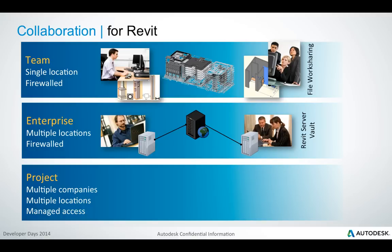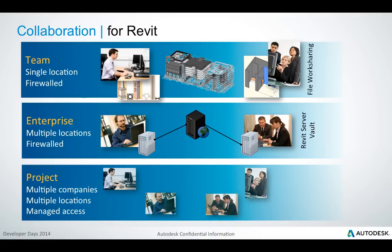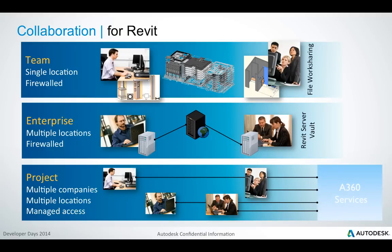We initially saw projects handled by teams in single locations working behind a firewall using file work sharing. As projects grew, this expanded into entire enterprises with teams in multiple locations, still behind a firewall, making use of Revit server and Vault to handle file sharing. Now we see projects involving multiple companies in multiple locations where there is no longer a possibility to hide behind a firewall, so we make use of managed access to interact with the data through web services provided by A360.